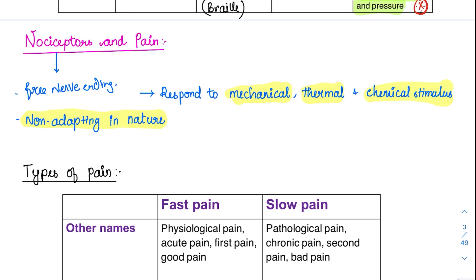What is the reason behind their non-adapting nature? We don't want the pain to get adapted. If a person adapts to pain, he will not take his hand away from an injurious stimulus, and there will be persistent injury to all the membranes. So that is the reason it should be non-adapting in nature.